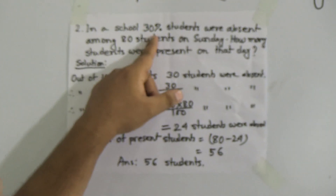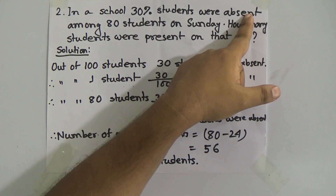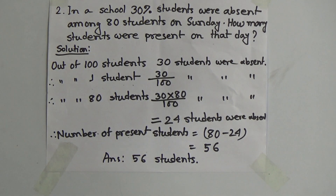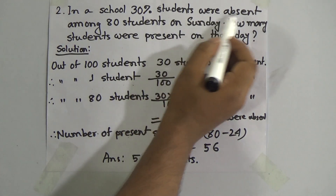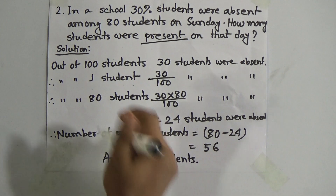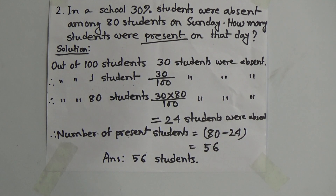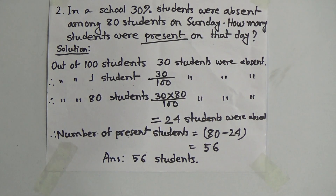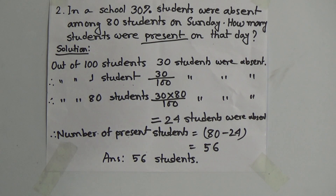Question number 2: In a school, 30 percent of students were absent among 80 students on Sunday. How many students were present on that day? The information tells us 30 percent students were absent. So at first we need to find out the actual number of students who were absent. After that we subtract the absent students from the total number of students to get the number of present students.